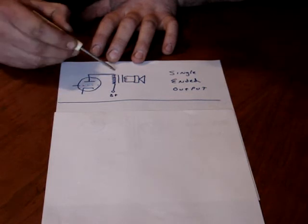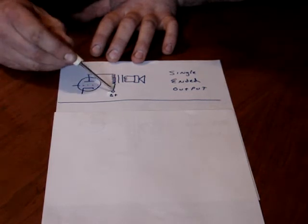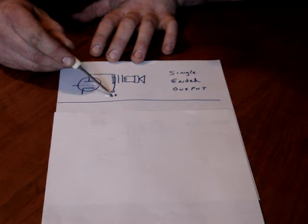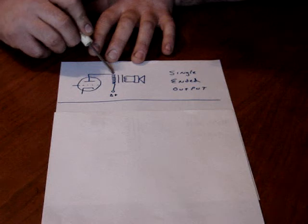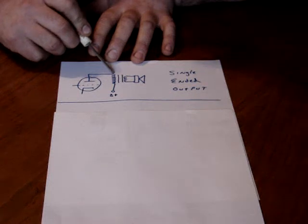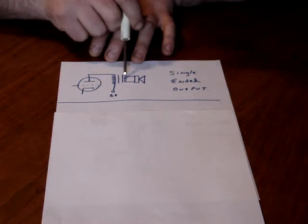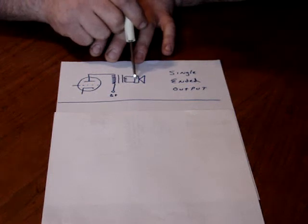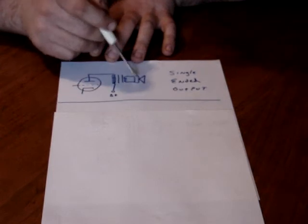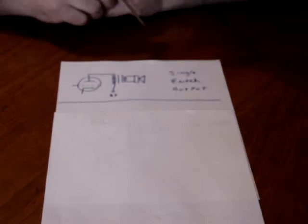The plate of the power tube is connected to the output transformer, which is connected to the B-plus, high voltage supply. It's one end. You connect the tube to one end of the transformer, single-ended. The output is the same. You have an 8-ohm tap on the transformer connected to an 8-ohm speaker, or 16-to-16, or 4-to-4, whichever the case may be.